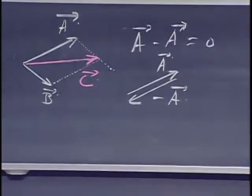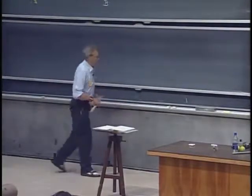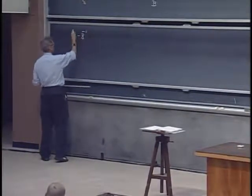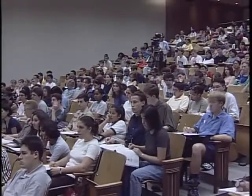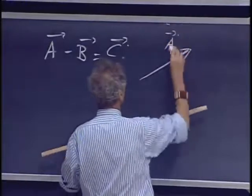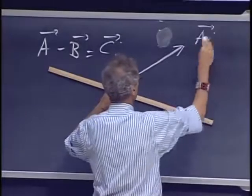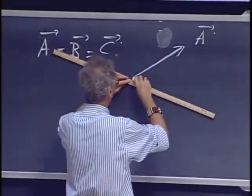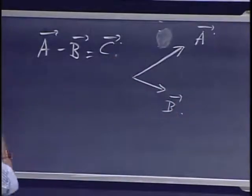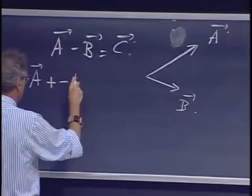And that brings us to the point of subtraction of vectors. How do we subtract vectors? So A minus B equals C. Here we have vector A and here we have vector B. One way to look at this is the following. You can say A minus B is A plus minus B.